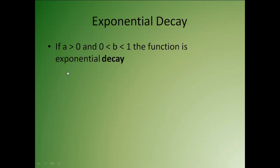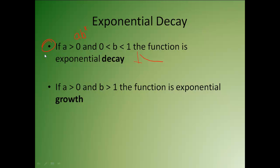Now with exponential decay, when you have a times b to the x, if a is bigger than 0 and b is between 0 and 1, the function is exponential decay, which means it's going to be coming down as you go to the right. If you have a greater than 0 and b is greater than 1, it's exponential growth, which we've already taken a look at. So we're going to be working on exponential decay this time.